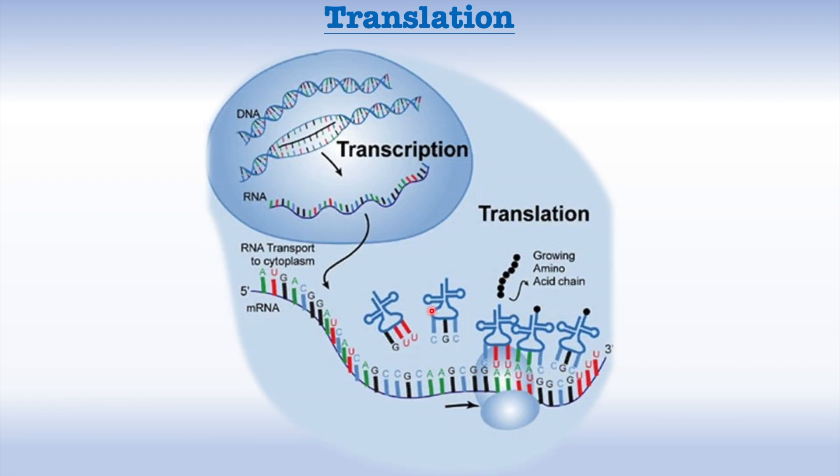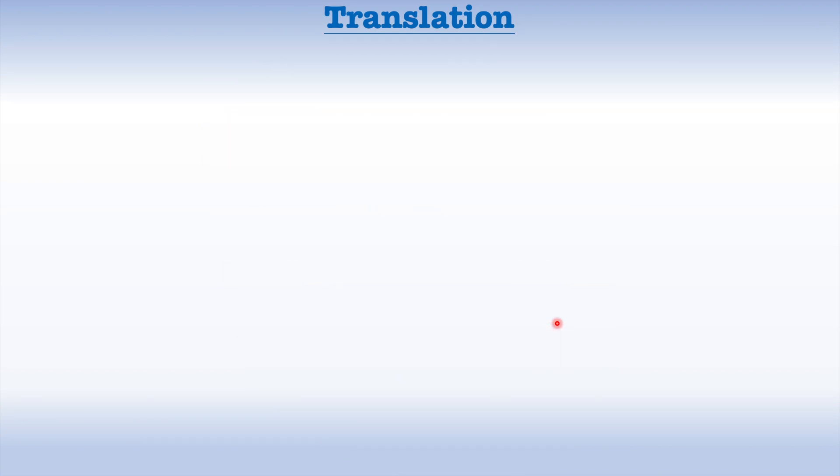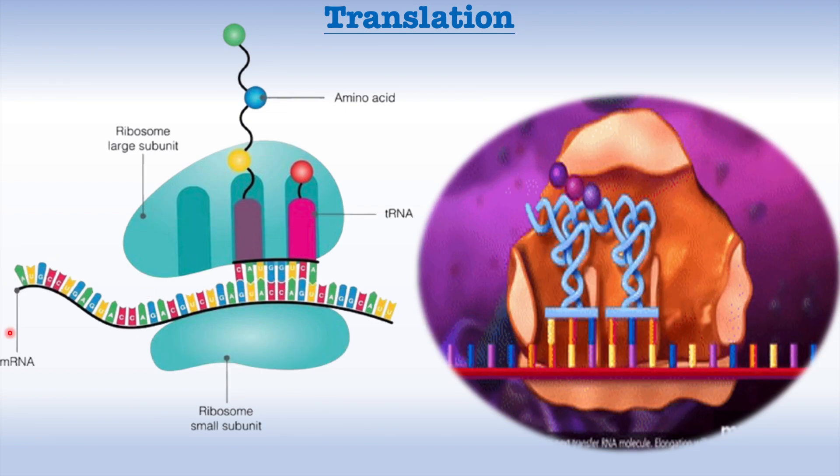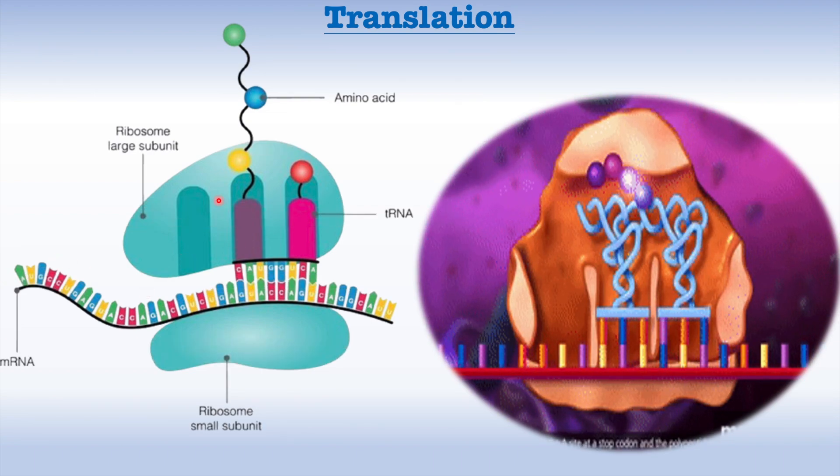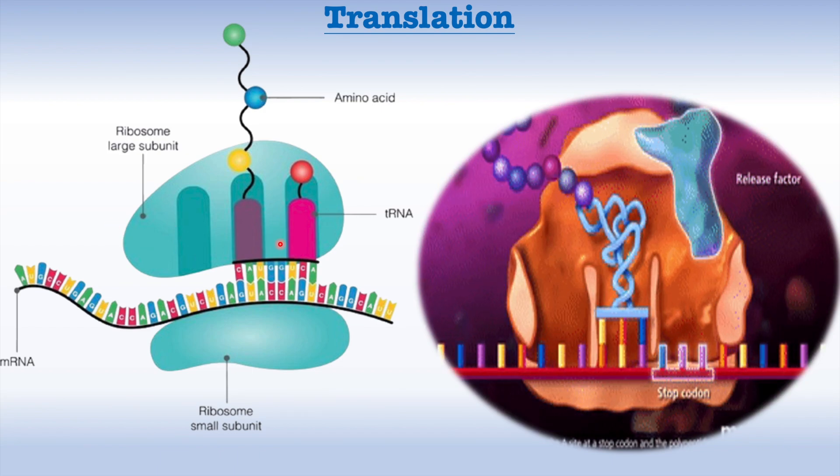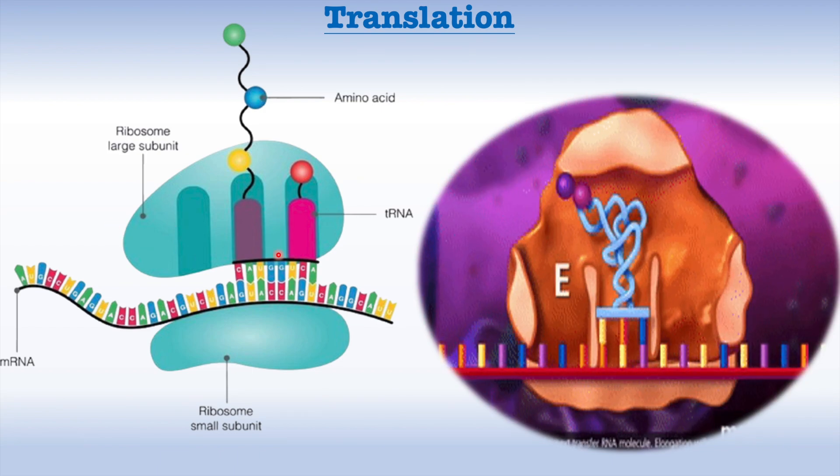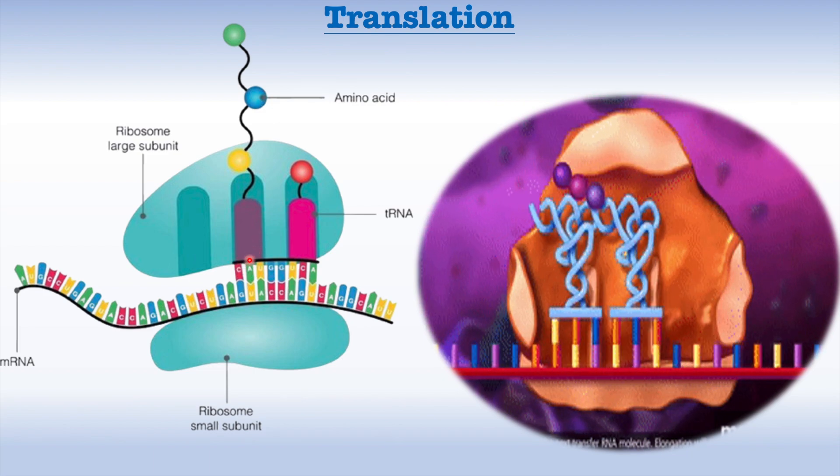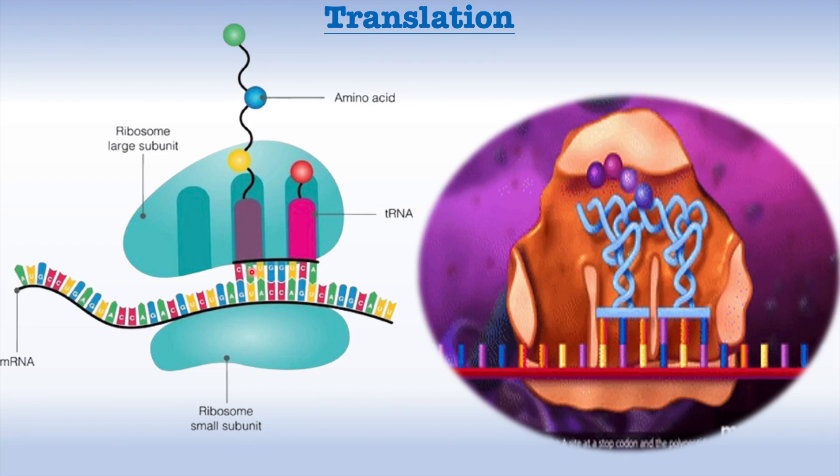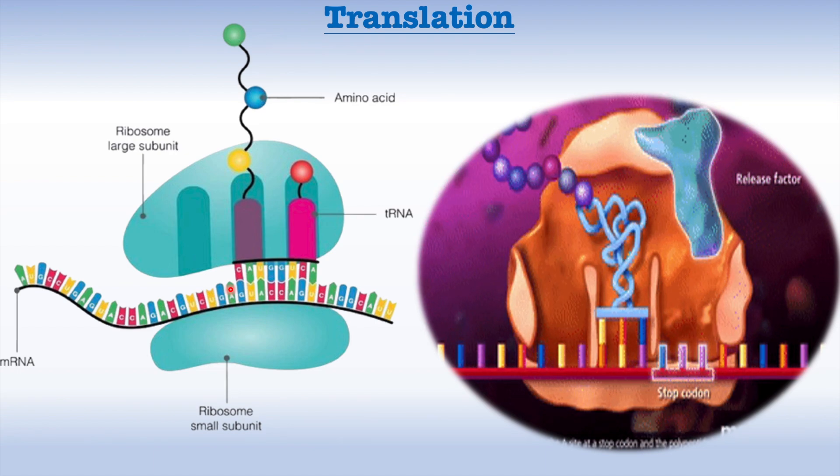The second step of protein synthesis is translation, where the genetic code from messenger RNA is used to build proteins. It occurs in the ribosomes and involves three main stages: initiation, elongation, and termination. During initiation, the ribosome assembles around the messenger RNA and the first tRNA carrying an amino acid. Here I have to say that all the time we have one start codon, AUG, which will bring the amino acid methionine for all proteins.